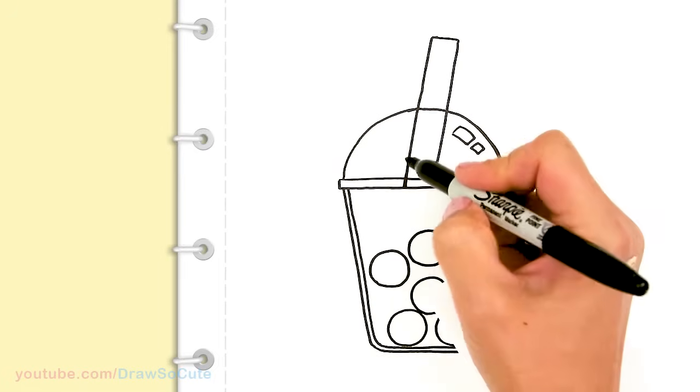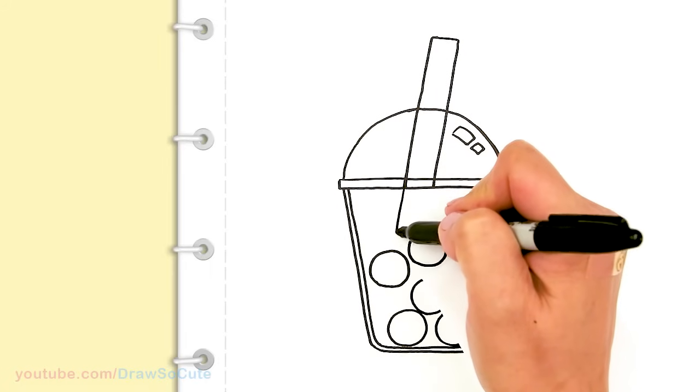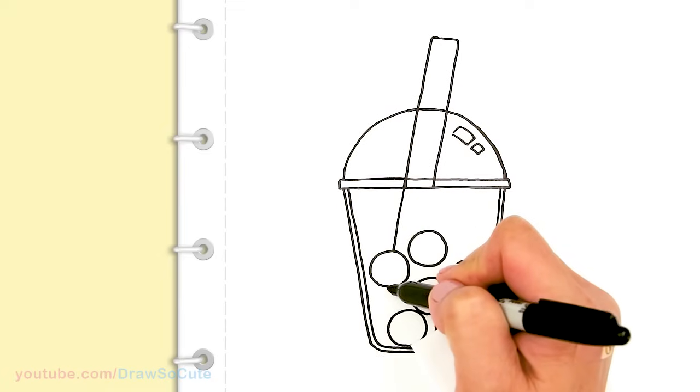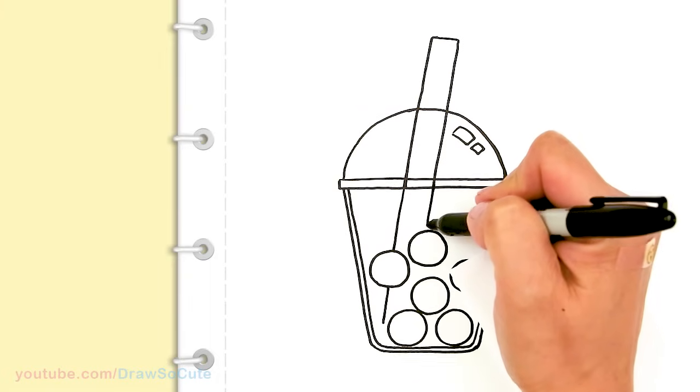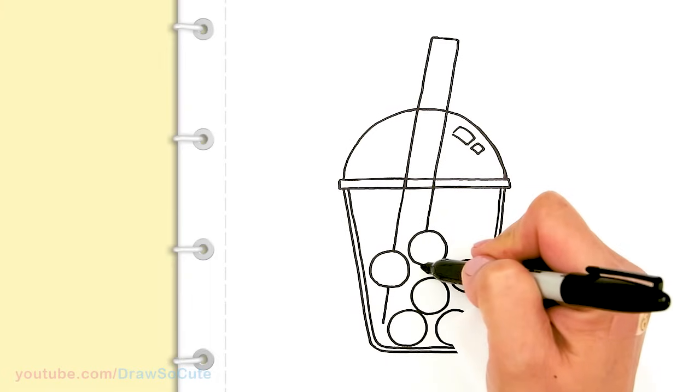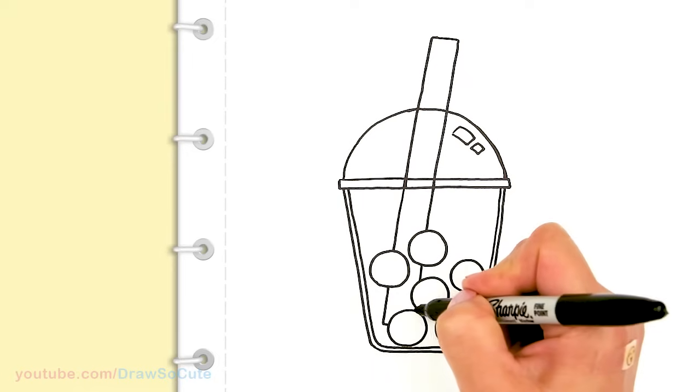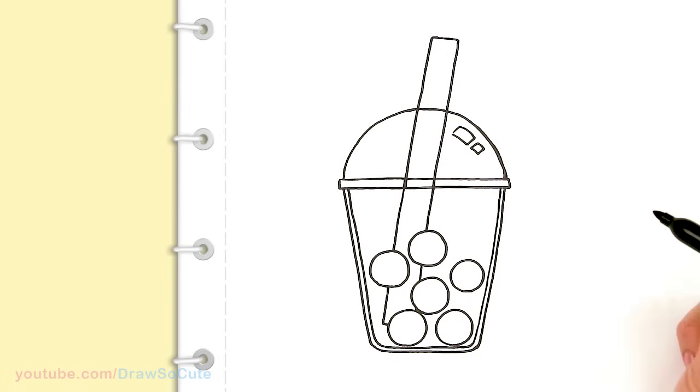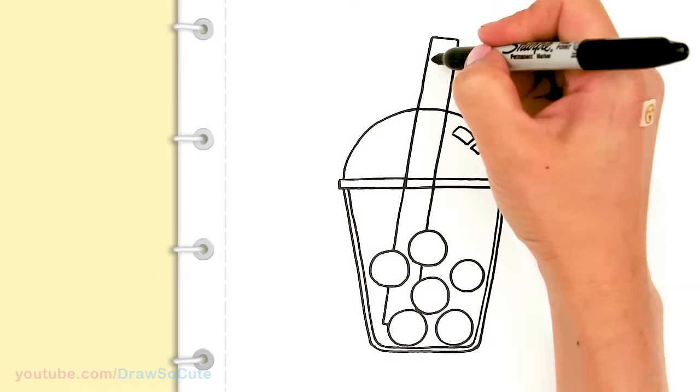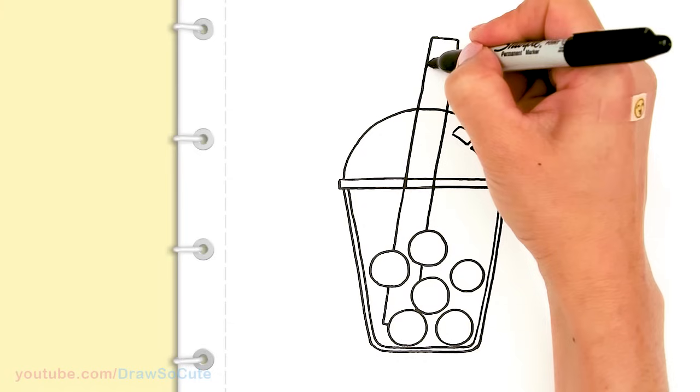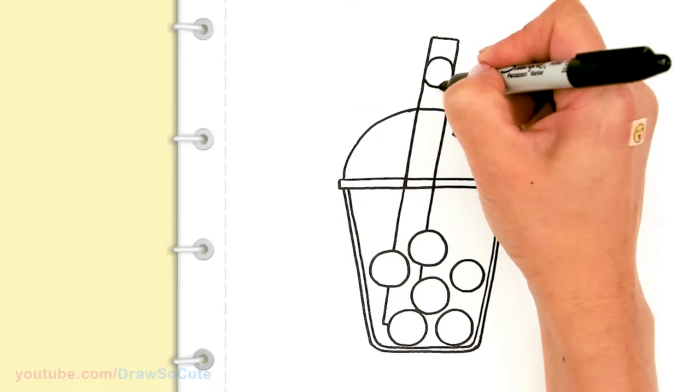So I have my boba and now let's come and finish this straw. So I'm going to bring it all the way down, just continuing my angle. And let's just cut it off right there. Let's draw a little boba that's coming up on the straw if you want to make it extra silly. So I'm going to come in here and just kind of draw an oval because it's a little bit squeezed right because it's going up the straw.